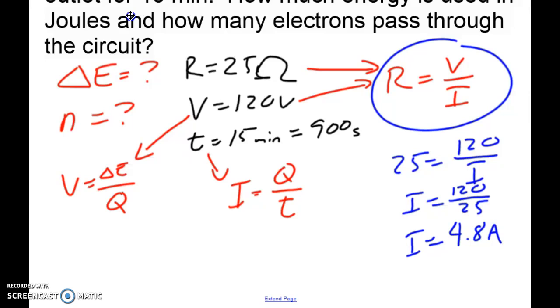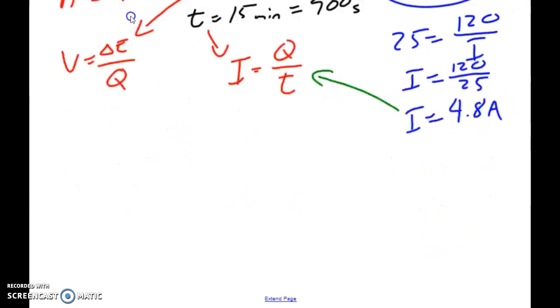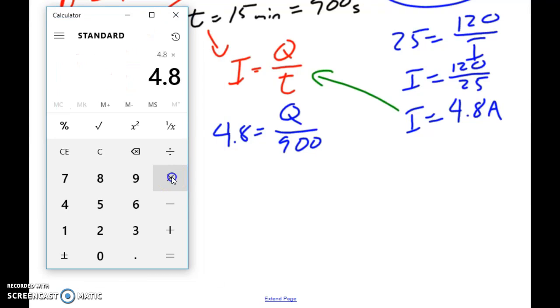So now what we can do is we can take this information and we can plug it into here. Before we only knew time, but now we know current and time. So we can plug in and we can say it's 4.8 is equal to Q over 900. So I plug in my numbers and I'm going to see that my value for Q is equal to 4,320 coulombs.